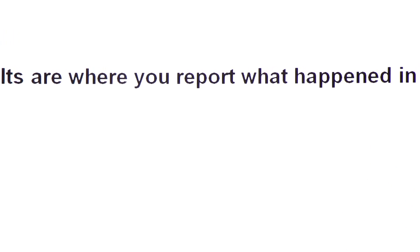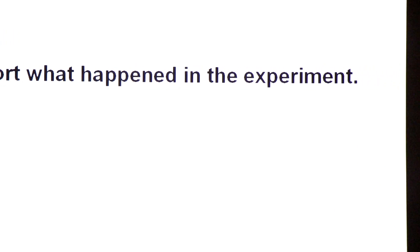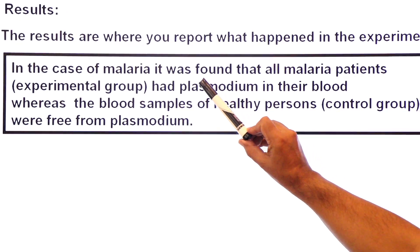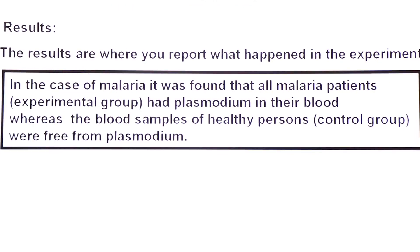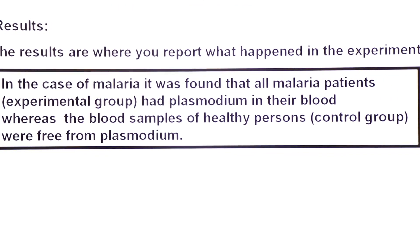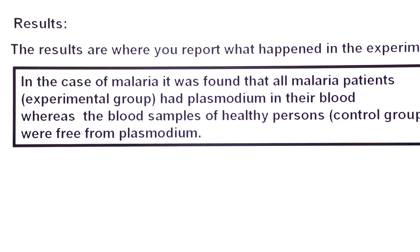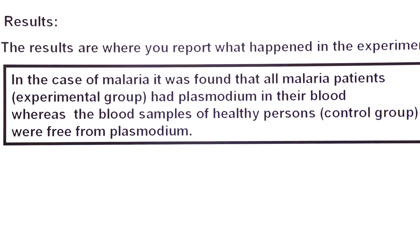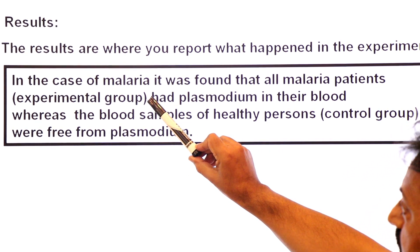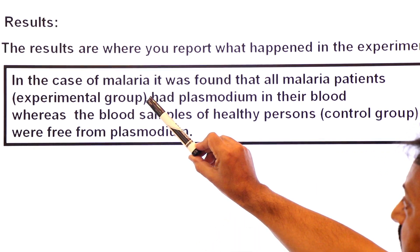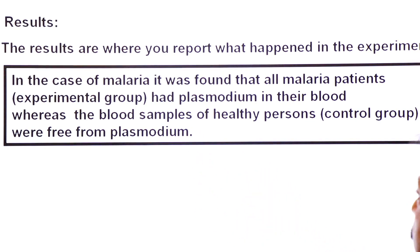The results are where you report what happened in the experiment. In the case of malaria, it was found that all malarial patients in the experimental group had plasmodium in their blood, whereas the blood samples of healthy persons in the control group were free from plasmodium. So the presence of plasmodium was noticed in all experimental group samples, and no plasmodium was found in the control group.